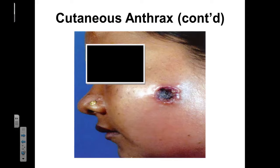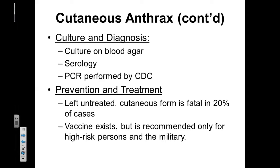Up next we have cutaneous anthrax. Cutaneous anthrax will typically manifest itself with black eschar lesions of dead tissue that appear on the patient's skin. To culture cutaneous anthrax we'll typically use blood agar in a laboratory setting, and we'll also diagnose it using serology or immunogenic methods and perform polymerase chain reactions for genomic diagnosis — typically done by the Centers for Disease Control. To prevent and treat cutaneous anthrax, we focus on hand washing and antibiotic treatments. If left untreated, this cutaneous form of anthrax will be fatal approximately 20% of the time.